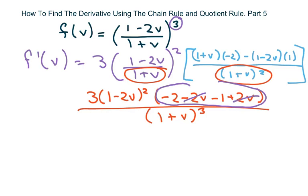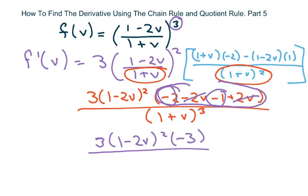So we're going to have negative 3. Well, let's write this. 3 times 1 minus 2V squared, and this equals negative 3 over 1 plus V cubed.